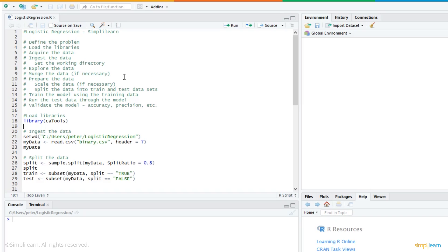munch the data if necessary, and then prepare the data. Scale the data if necessary. Split the data into train and test data sets. Then train the model using the training data and run the test data through the model. And then validate the model for accuracy and precision, etc.